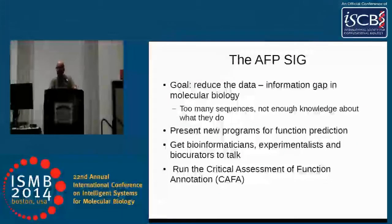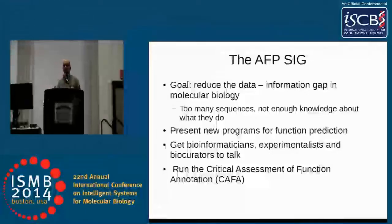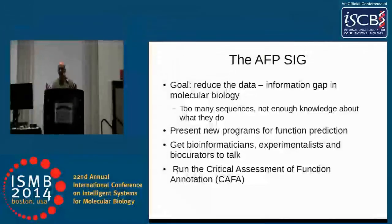The goal is to reduce the data-information gap in molecular biology. We have too many sequences and not enough knowledge about what they do. One way to solve this is to assay all the sequences experimentally, but that is slow, expensive, and many don't even know how to start. Assays only work in certain ways. Another way is for us as a community of bioinformaticians to get together and present new programs and algorithmic solutions to predicting function from biological sequence and structure data.